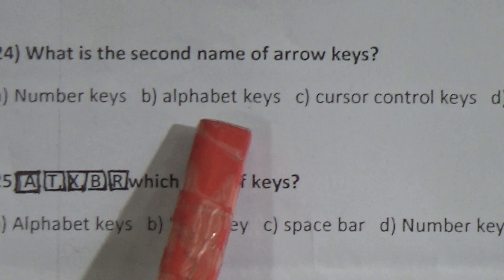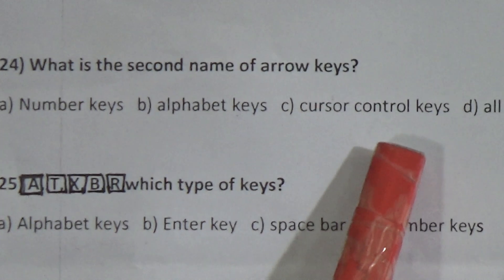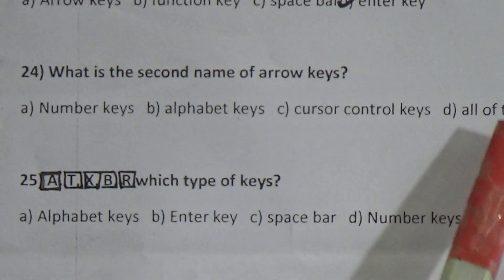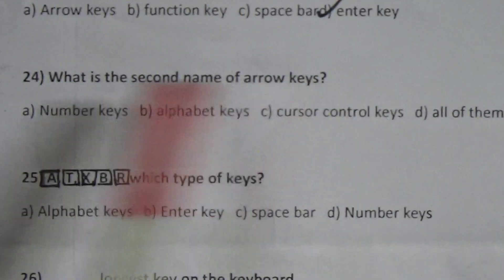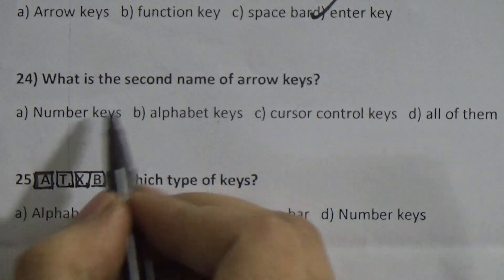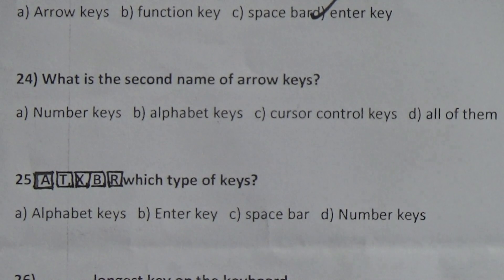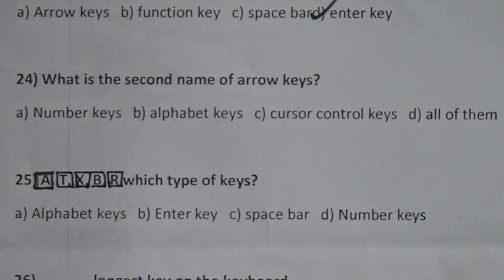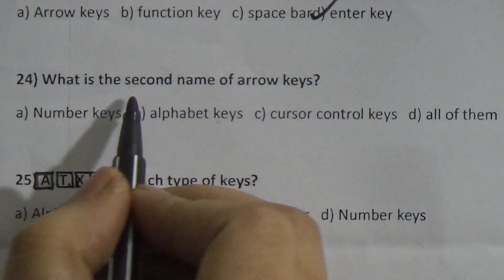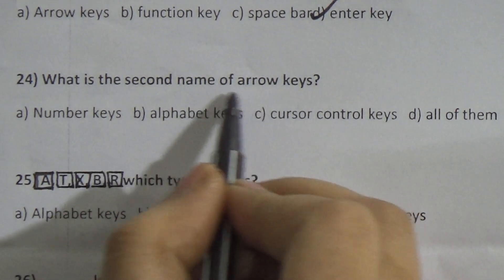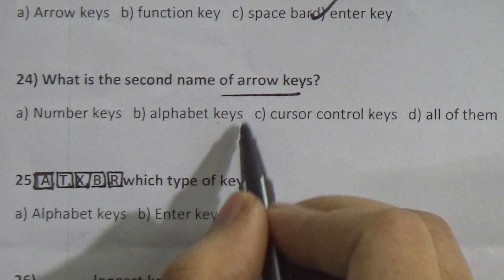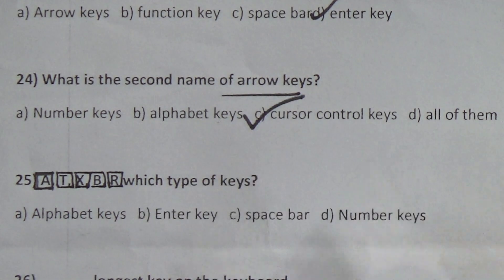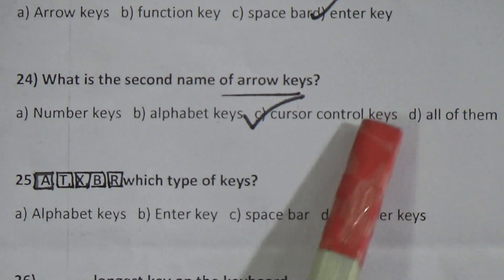Question 24: What is the second name of arrow keys? Options: A) number keys, B) alphabet keys, C) cursor control keys, D) all of them. The correct answer is C — cursor control keys.